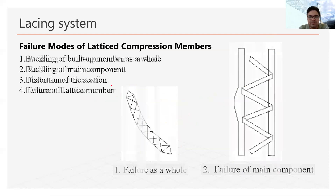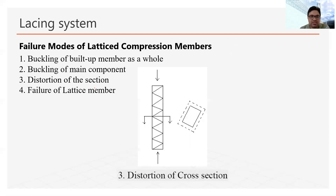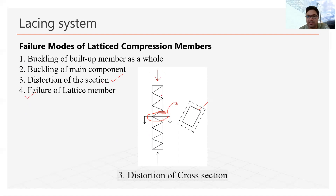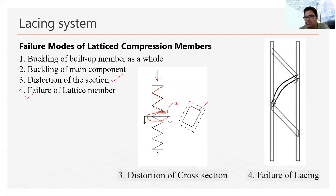In the third case, the section may distort. If there is a very heavy load, sometimes the cross-section at a particular point may not remain in position — it may twist or displace from its position. This is the third kind of failure: distortion of the cross-section. In the fourth case — failure of the lattice member — the secondary members may buckle. If such failure occurs, we call it failure of lacing or lattice.